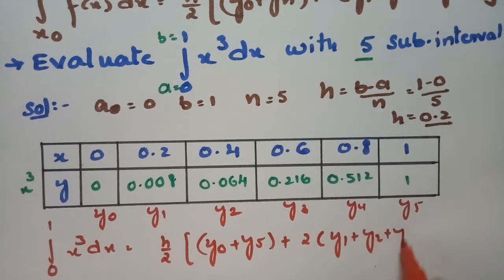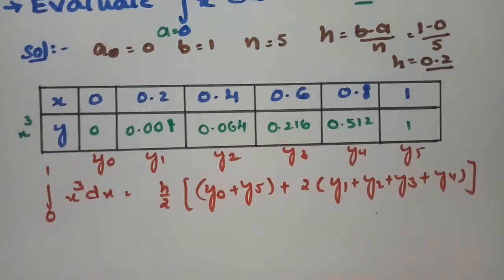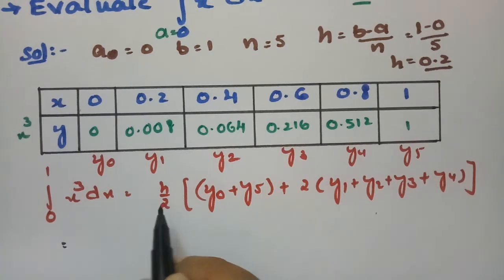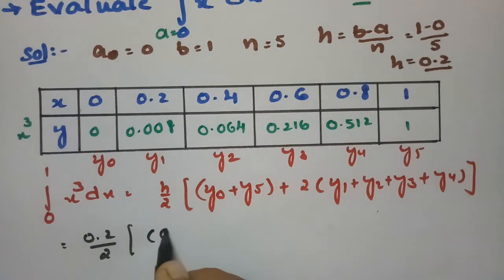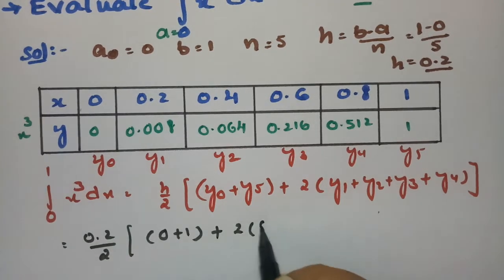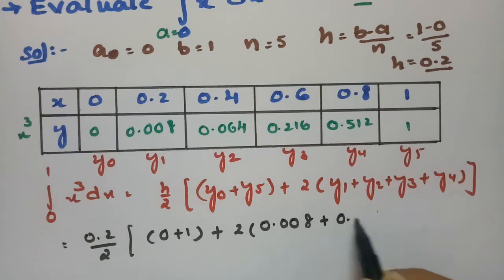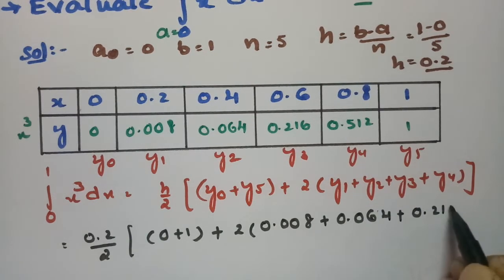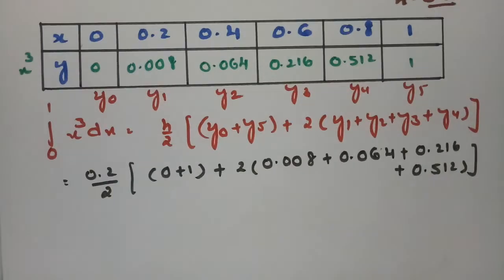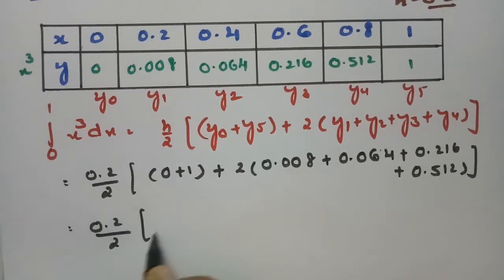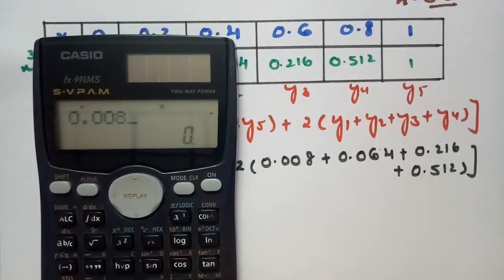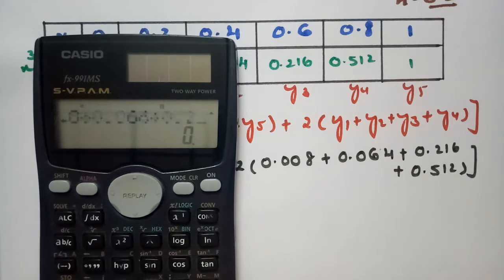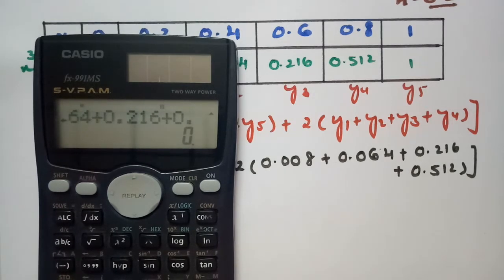Now I will substitute all the values. Our h value is 0.2, so this becomes 0.2/2 times (0 + 1) plus 2 times (y1 + y2 + y3 + y4), which is 2 times (0.008 + 0.064 + 0.216 + 0.512). Adding those remaining ordinates gives 0.008 + 0.064 + 0.216 + 0.512 = 0.8.